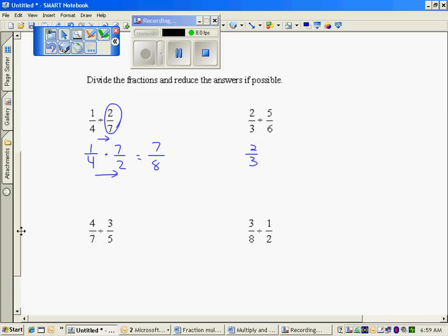Two thirds, and it's always the reciprocal of the second fraction. Multiplying straight across, twelve fifteenths, which reduces to three goes into twelve four times, three goes into fifteen five times. Looking earlier, three goes into three once, three goes into six twice. Multiplying straight across, you get four fifths.